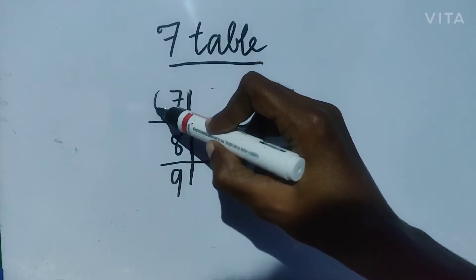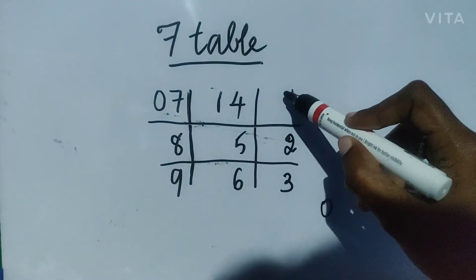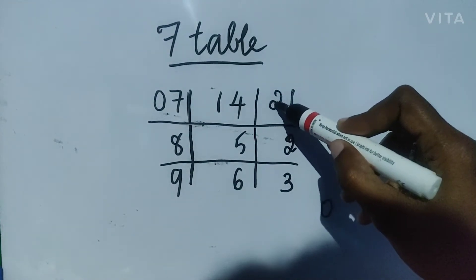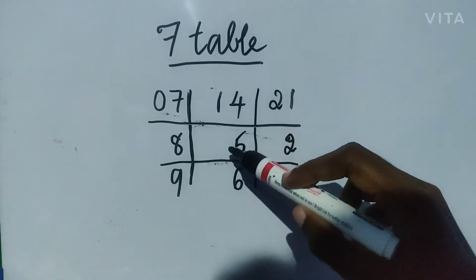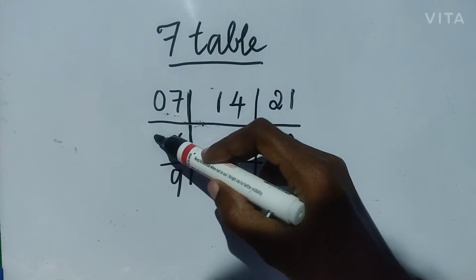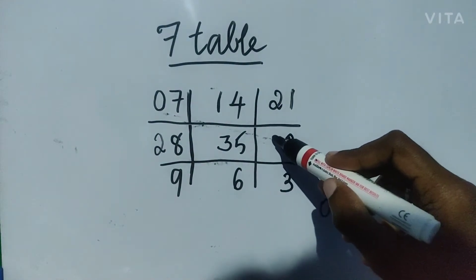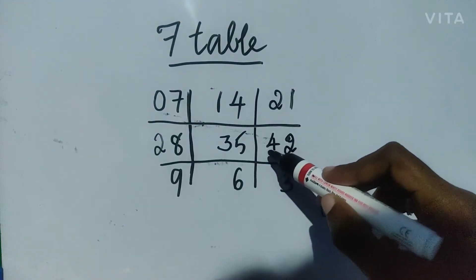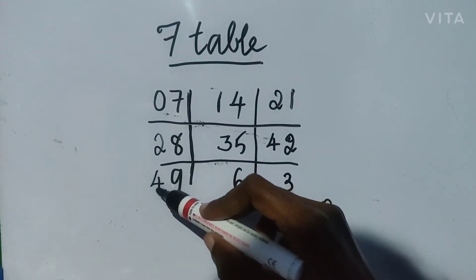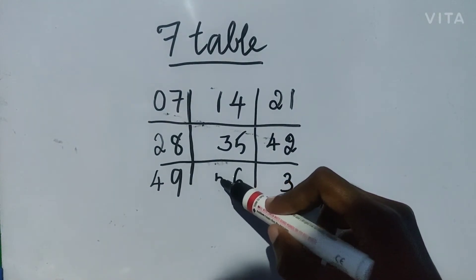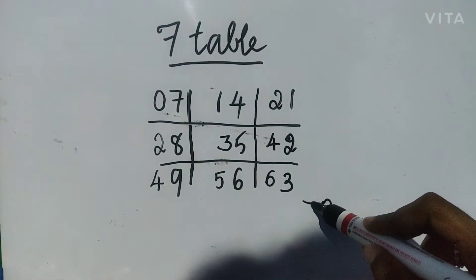Now we have finished with 2. In the second row we will begin again with 2. So 2 here, 3, 4. We have finished with 4. Now in the third row begin with 4, 4, 5, 6 and here 7.